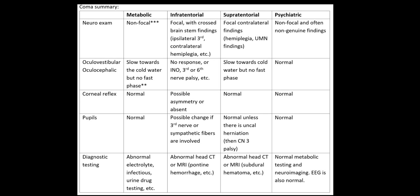In a metabolic process, the cortical neurons are disturbed — and that's where the fast phase of nystagmus comes from. In an infratentorial lesion like a brainstem lesion, cold calorics may give asymmetrical eye movements. If the MLF is affected it may look like an INO, or if individual cranial nerves are affected — like the sixth nerve — one eye may not abduct normally.